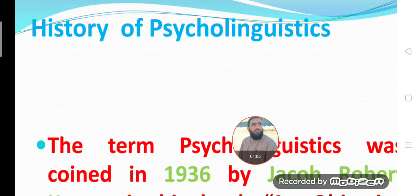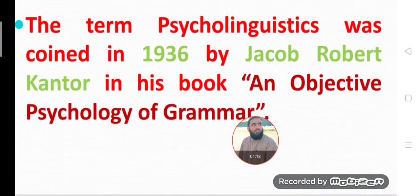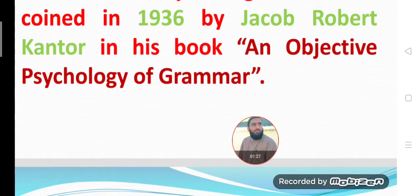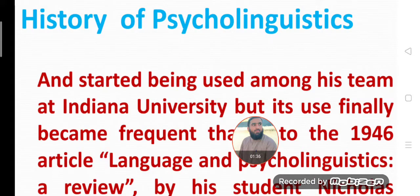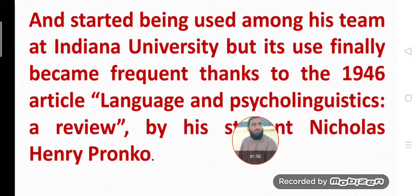What is the history of psycholinguistics? The term psycholinguistics was coined in 1936 by Jocky Robert Cantor in his book 'An Objective Psychology of Grammar.' He is an American psychologist who first coined the term psycholinguistics. After that, his students and his team at university worked on the same concepts in 1946 and published various articles regarding psycholinguistics and psychology of language.